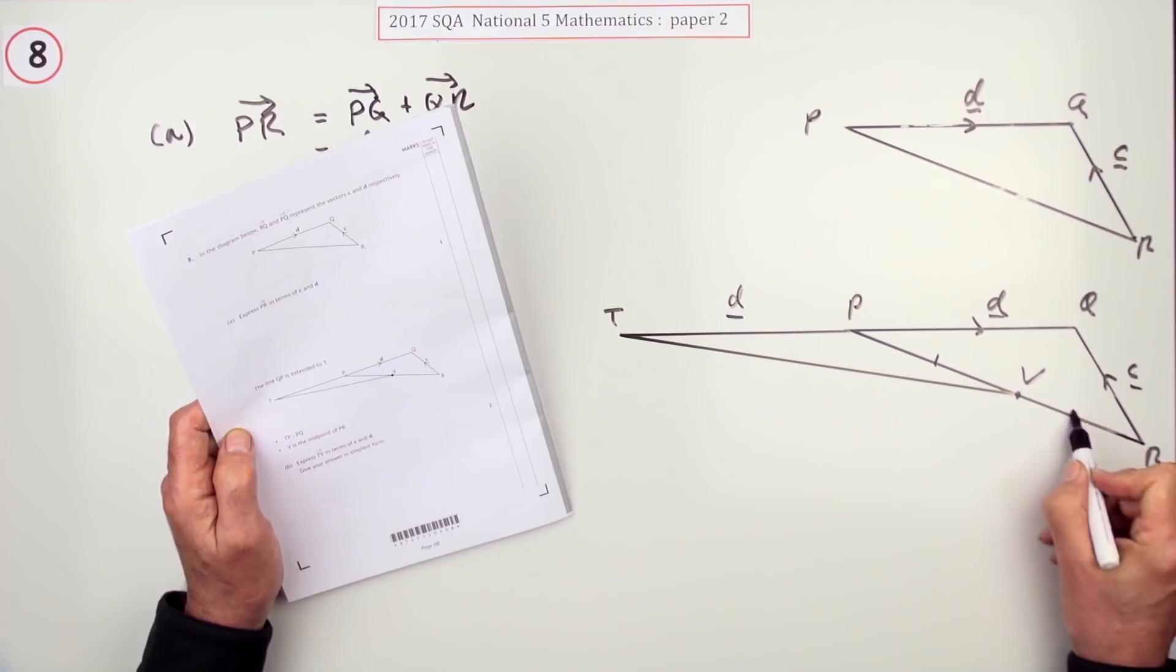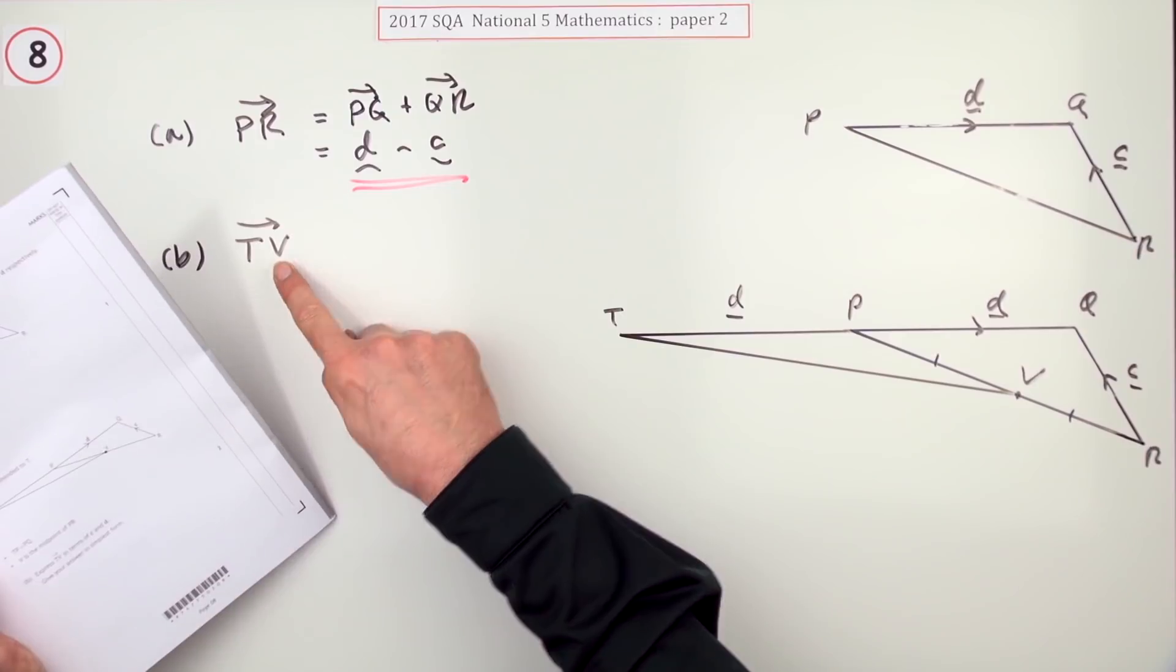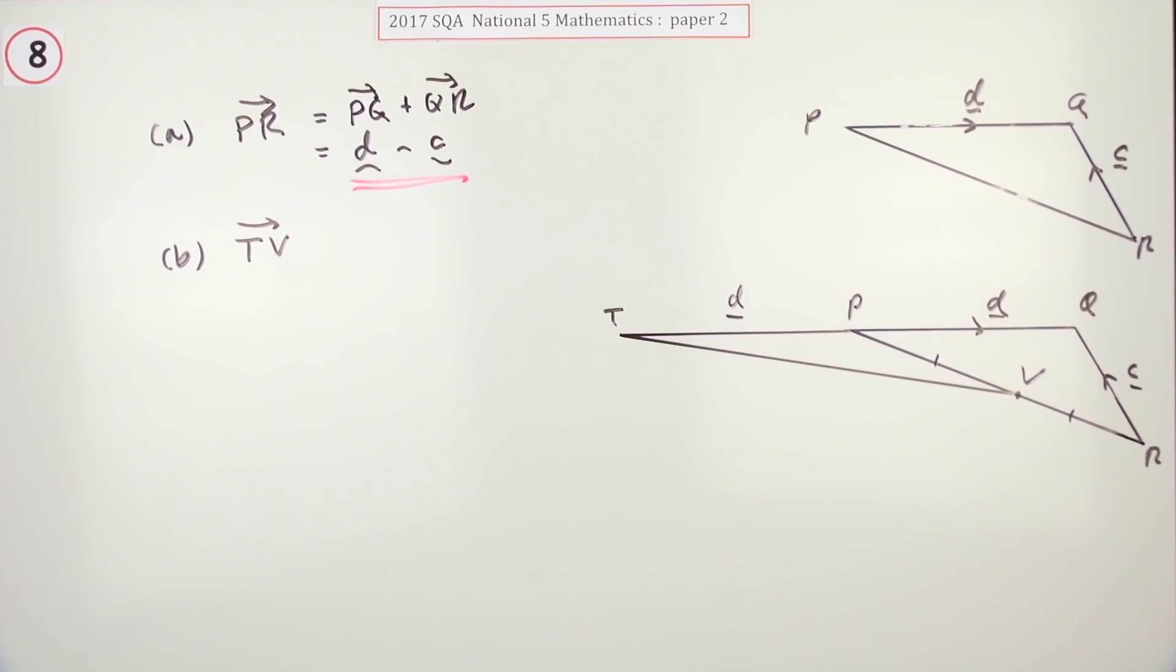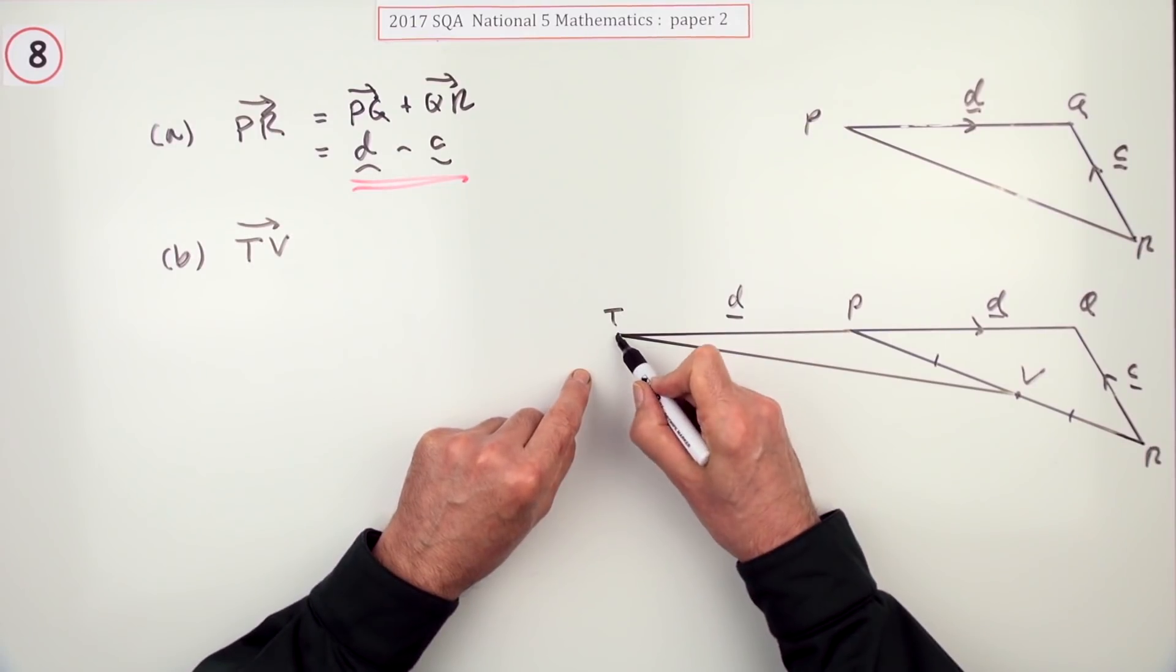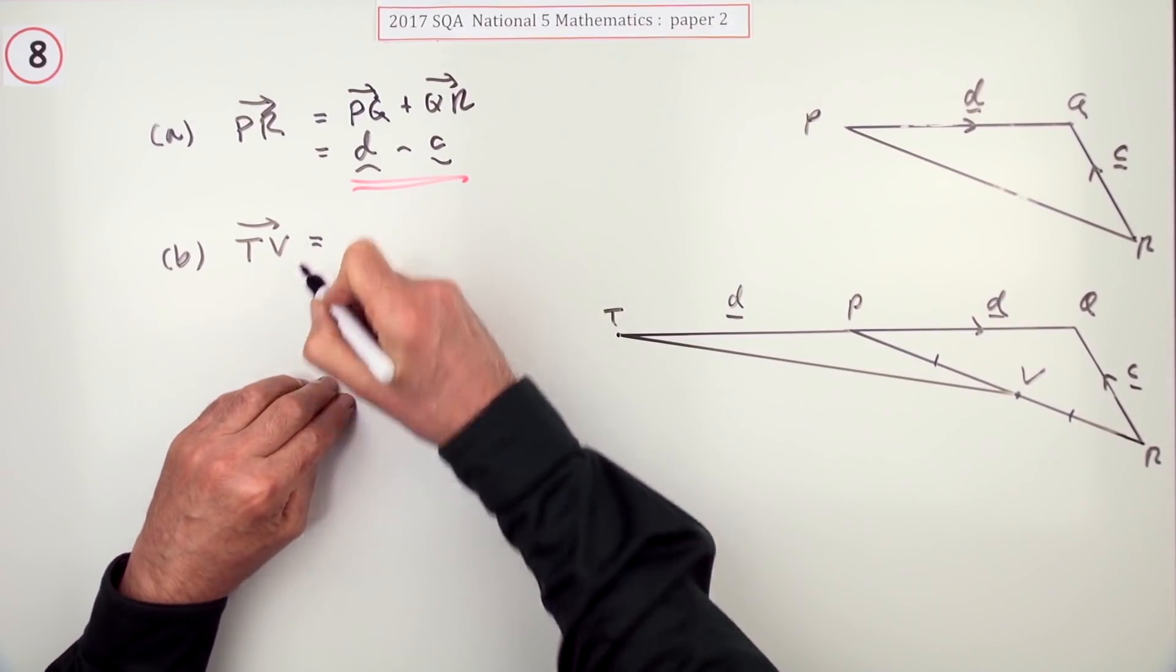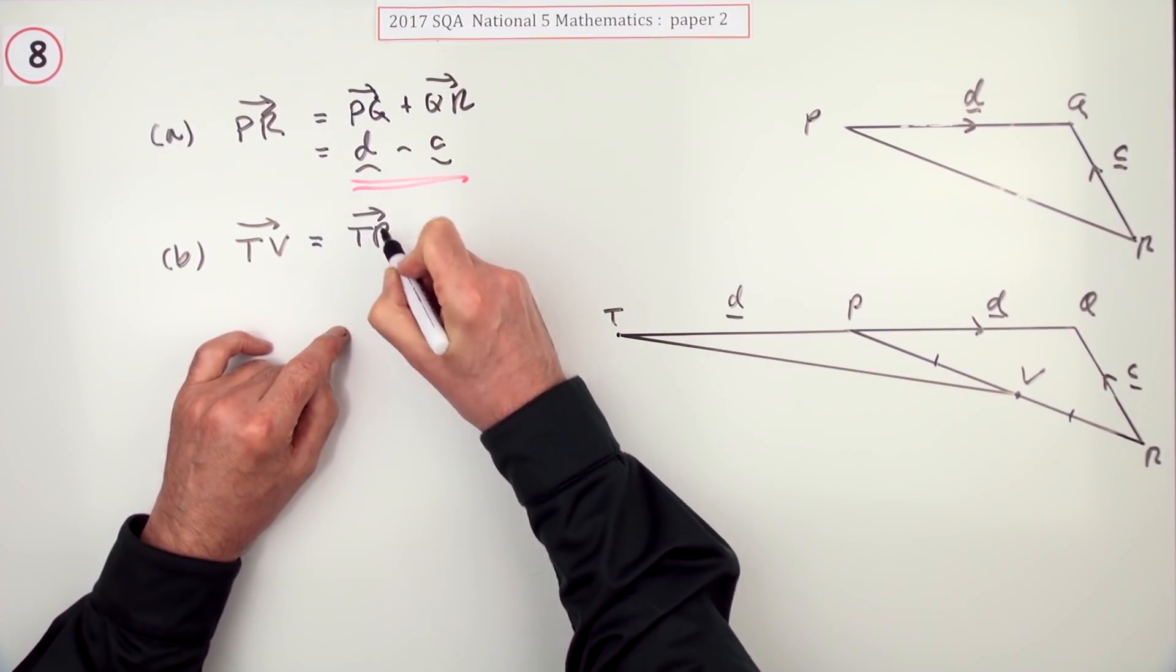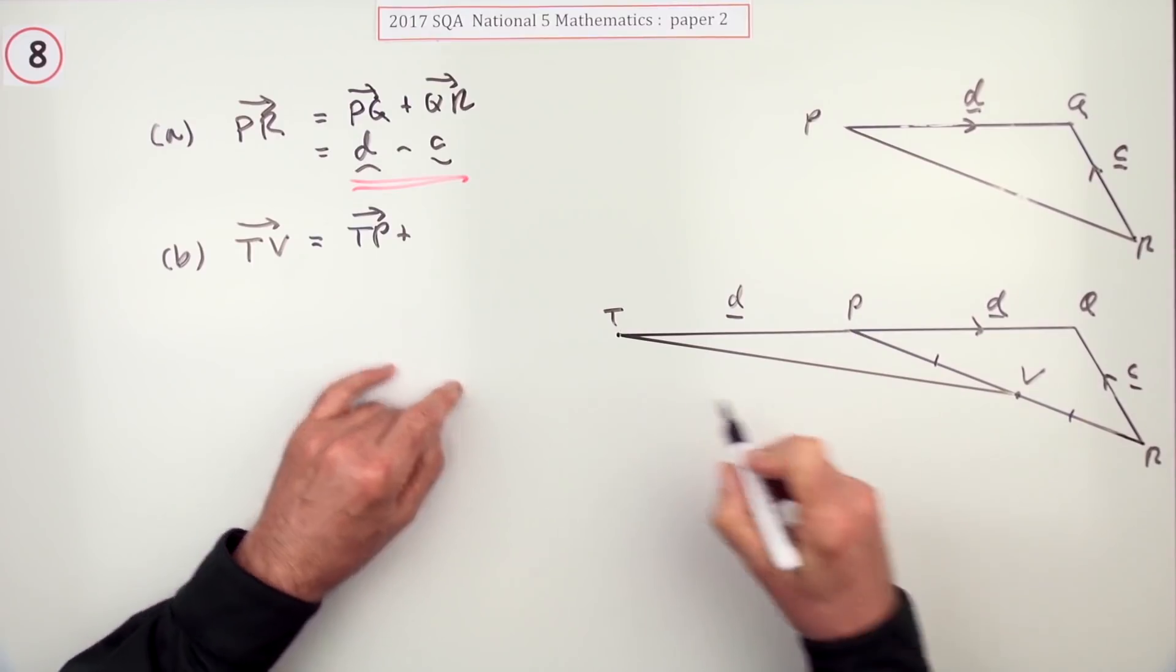V is the midpoint. For expressing TV in terms of d's and c's, what's the route this time? I want to go from T to V but obviously I can't go that way because I don't know it. So my only option is to go from T to P and then go from P to V.